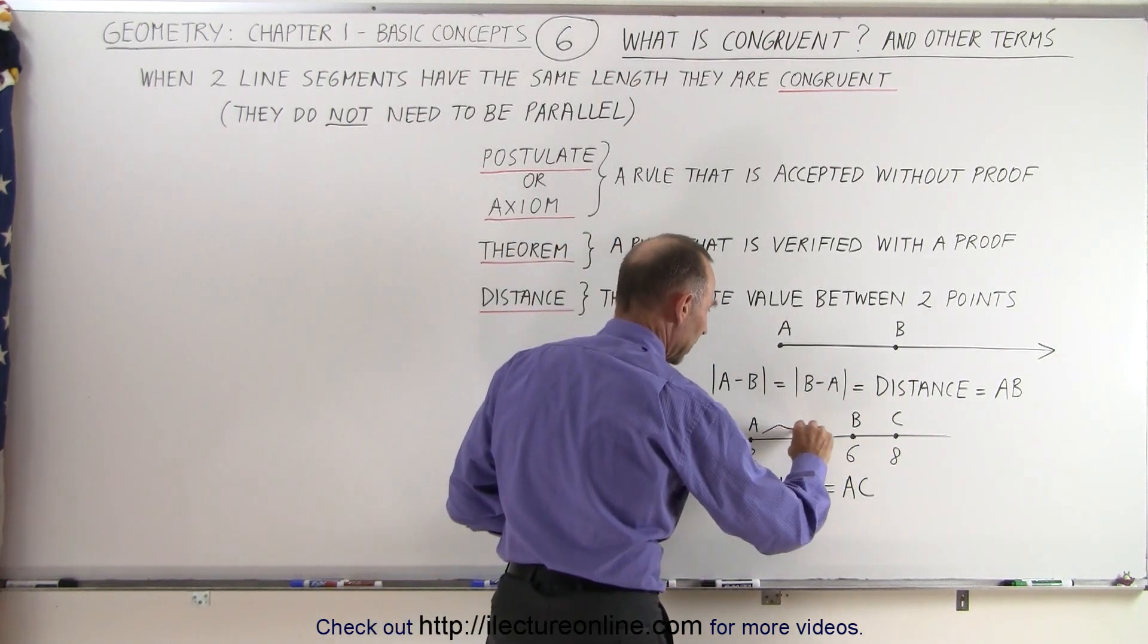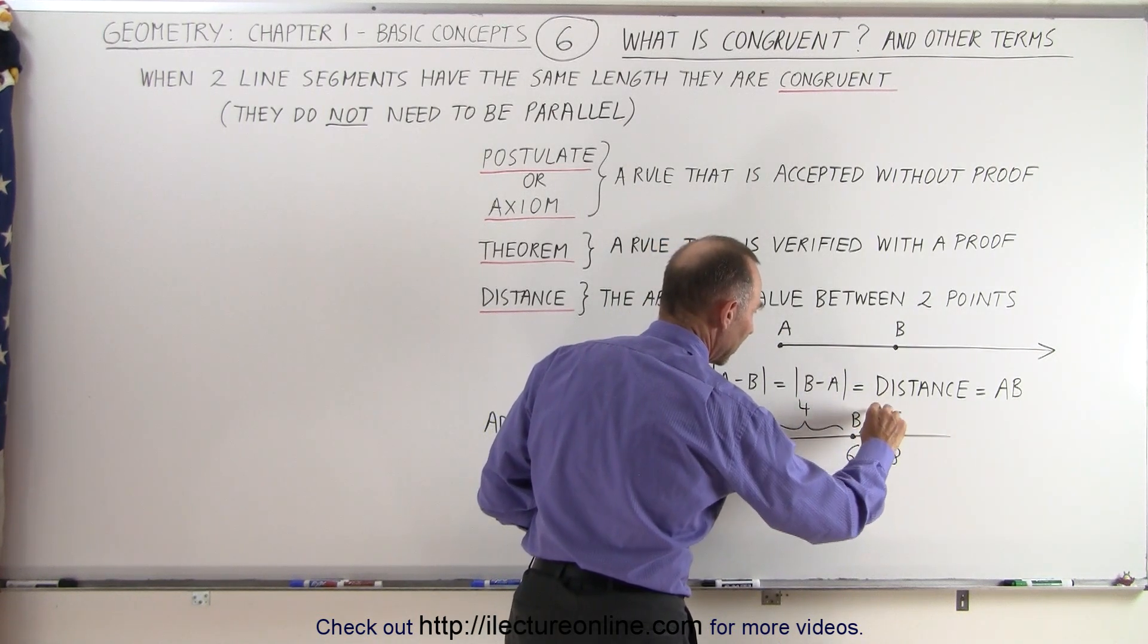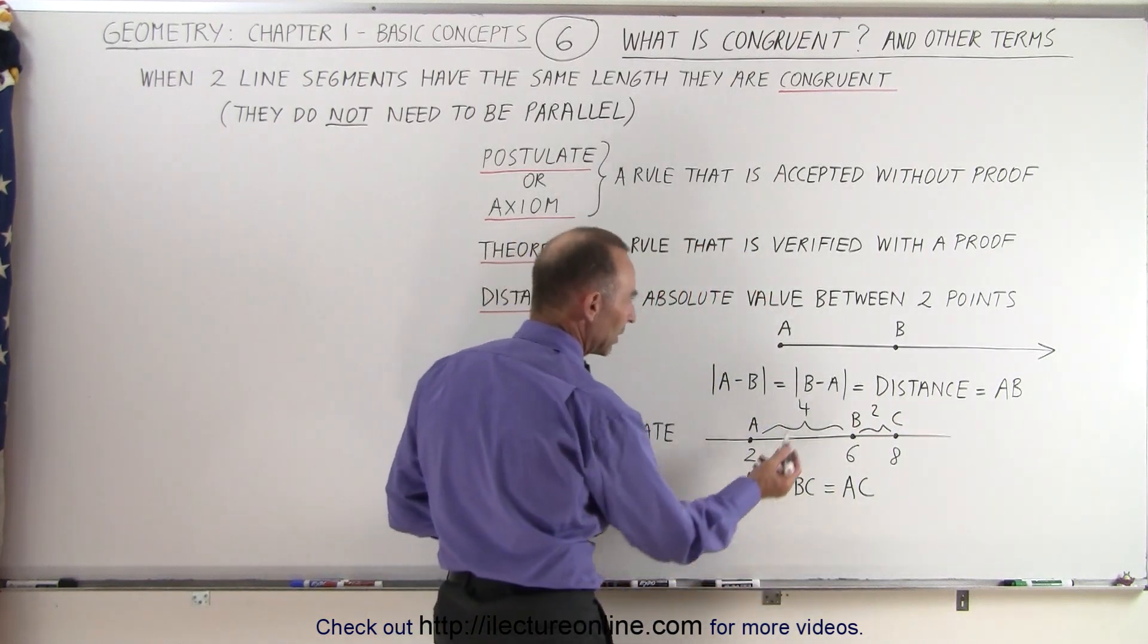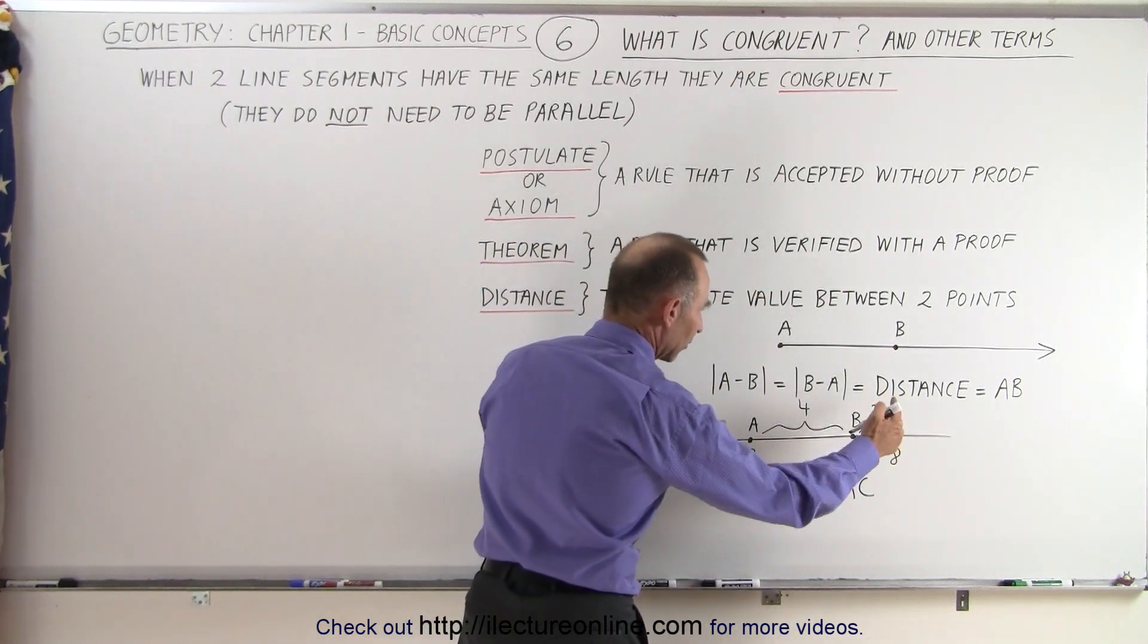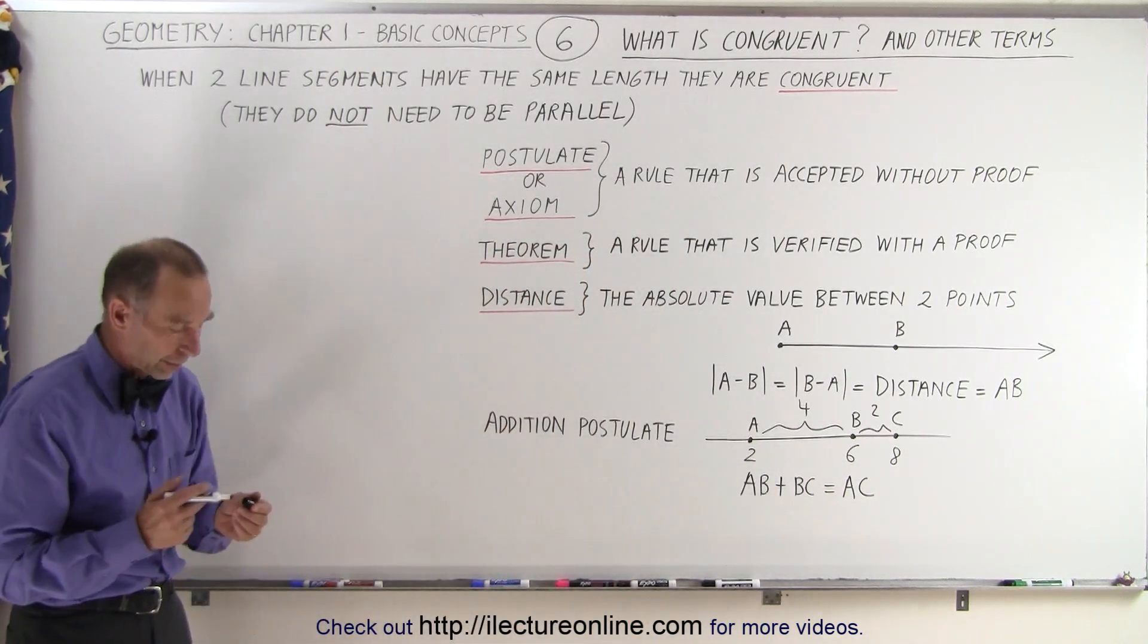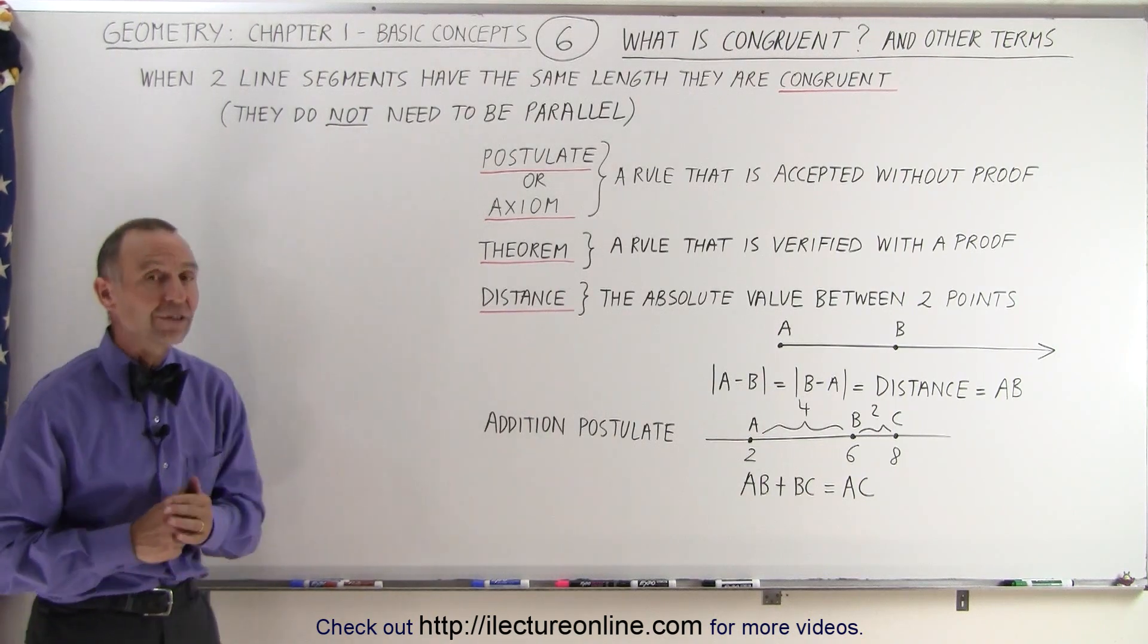So if the distance between A and B is 4, and the distance between B and C is 2, because 8 minus 6 is 2, then you know that when you add these two up together, you get the distance between A and C. And that doesn't need to be proven. That becomes quite clear. And those are the definitions of these five additional terms.